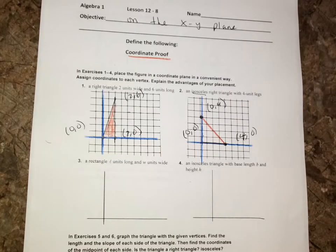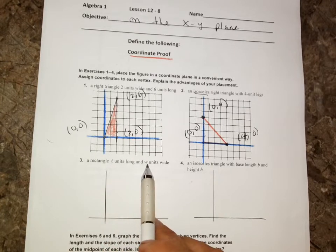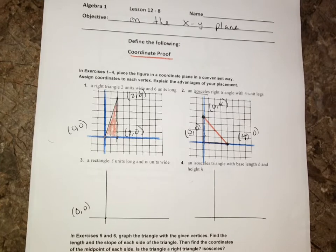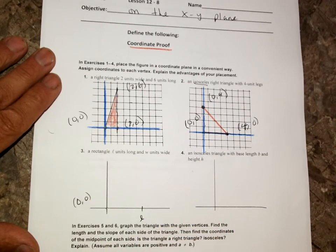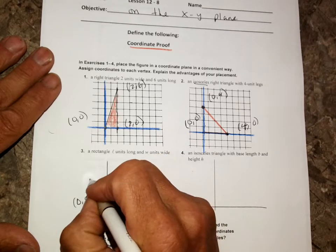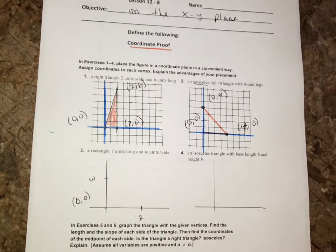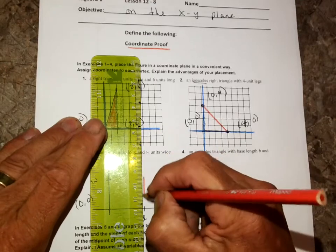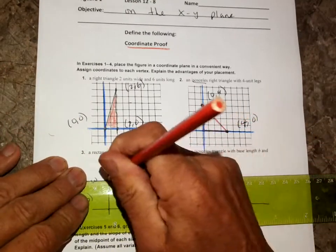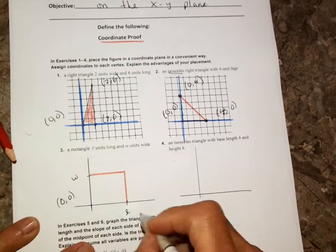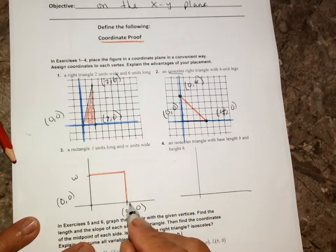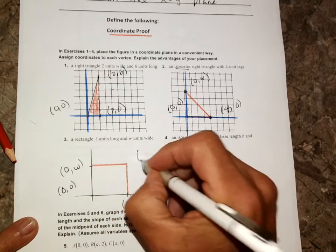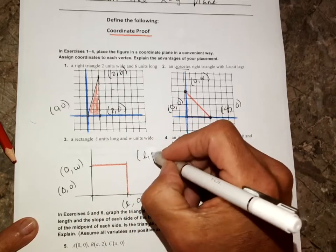Okay, now, three is different, because we don't have any lengths except for L and W. Again, I like to start at the origin. L units long could be anything, so let's just call this L, and W units wide. I'm going to draw in my rectangle. This is going to be L, 0, because you're out L and up 0. This one's going to be at 0, W. And this point right here has to be over L, up W. Hopefully, that makes sense.